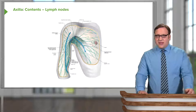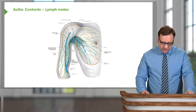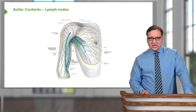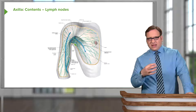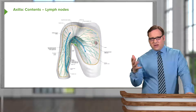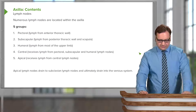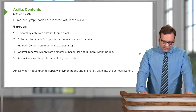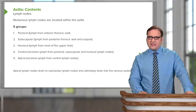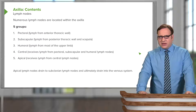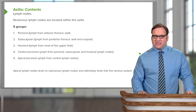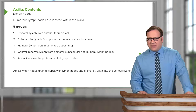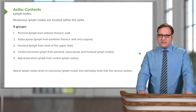Looking at the lymph nodes, there are a whole series of axillary lymph nodes located within the axilla. There are five groups that drain into them: pectoral lymph nodes from the anterior thoracic wall, subscapular lymph nodes from the posterior thoracic wall and scapula, and humeral lymph nodes — which receive most of the lymph from the upper limb.